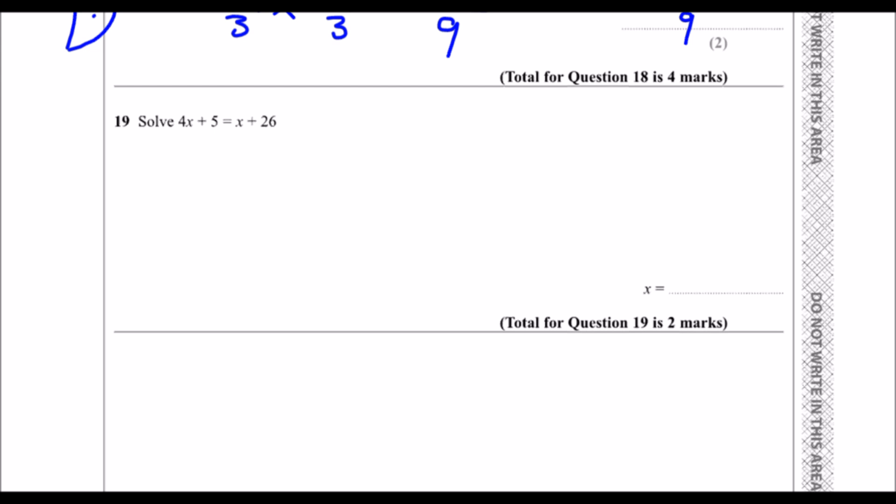Question 19: Solve 4x + 5 = x + 26. Whenever it says solve, that's saying find out what x is. So what is x? The first step in one of these questions is to get rid of the smallest x.